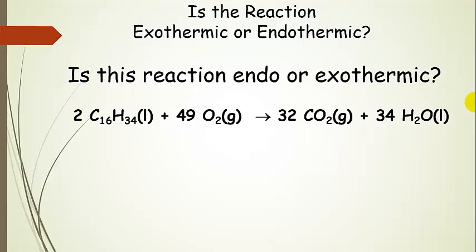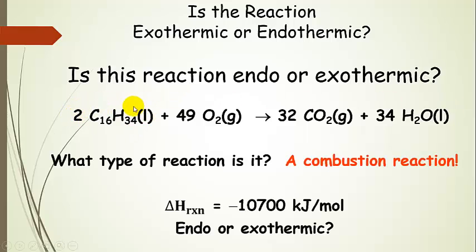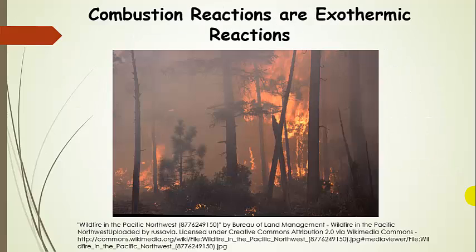Take a look at this reaction — is it endothermic or exothermic? We have a hydrocarbon and oxygen, and we end up with carbon dioxide and water. What type of reaction is it? It's a combustion reaction — we're burning something. The delta H reaction for this is negative 10,700 kilojoules per mole, so it is exothermic. There is a picture of a combustion reaction, and combustion reactions are exothermic.